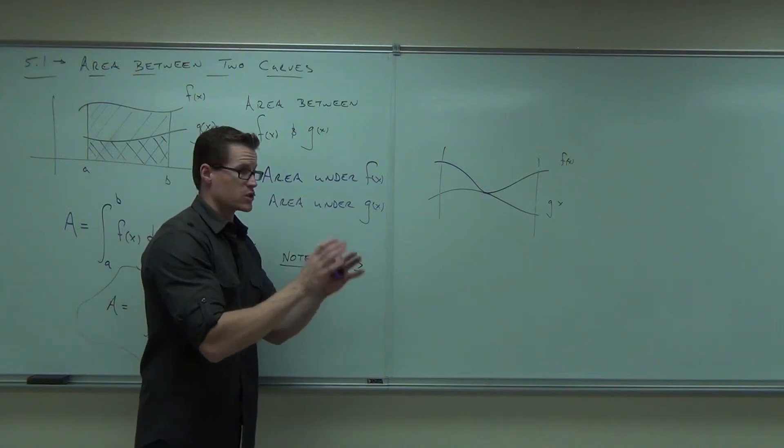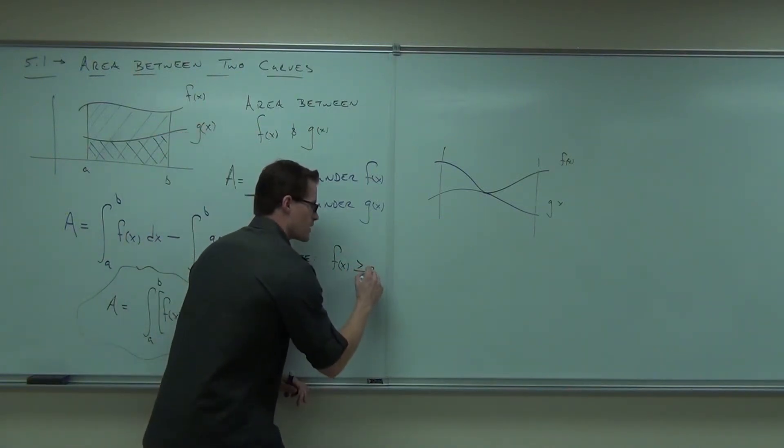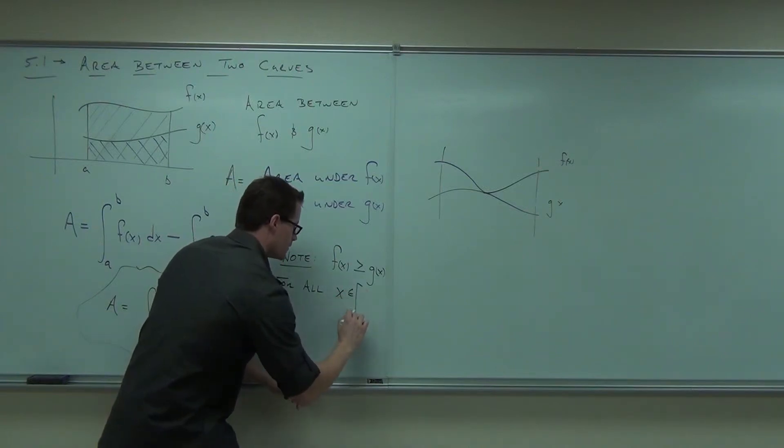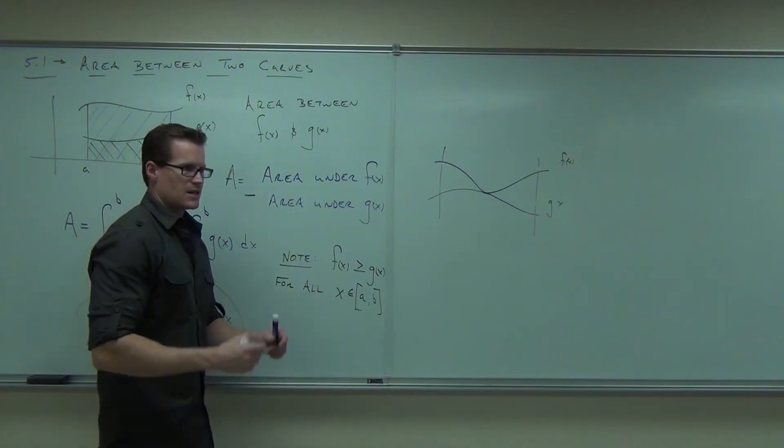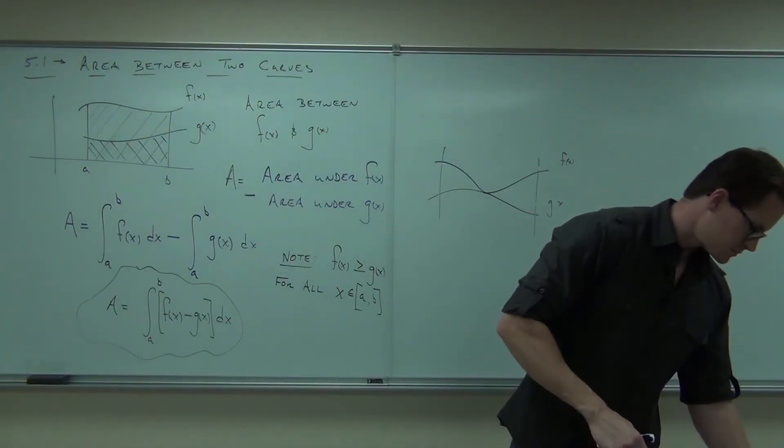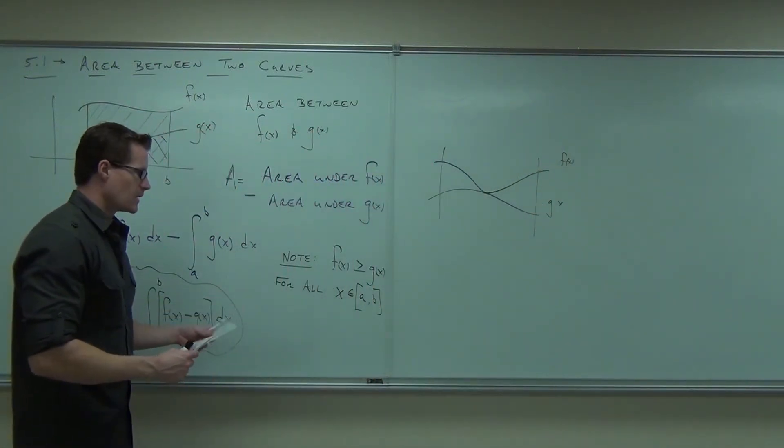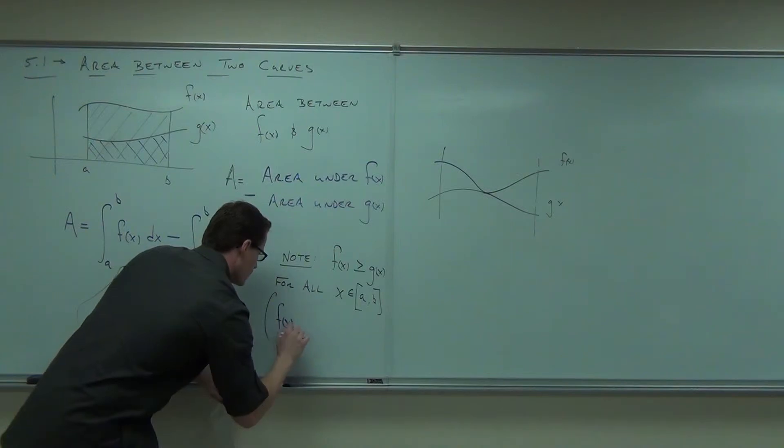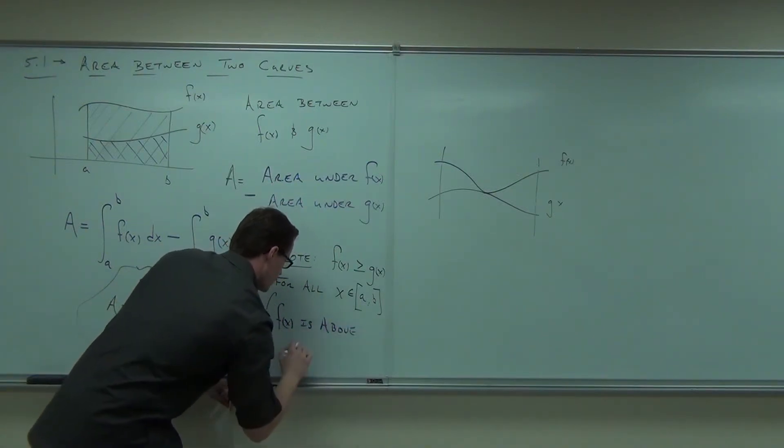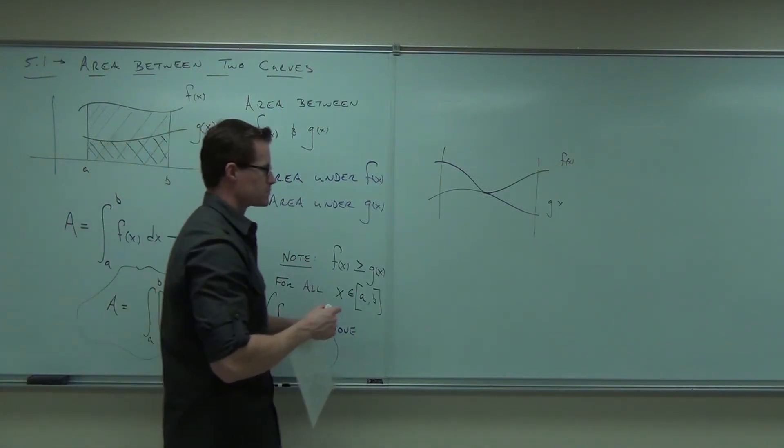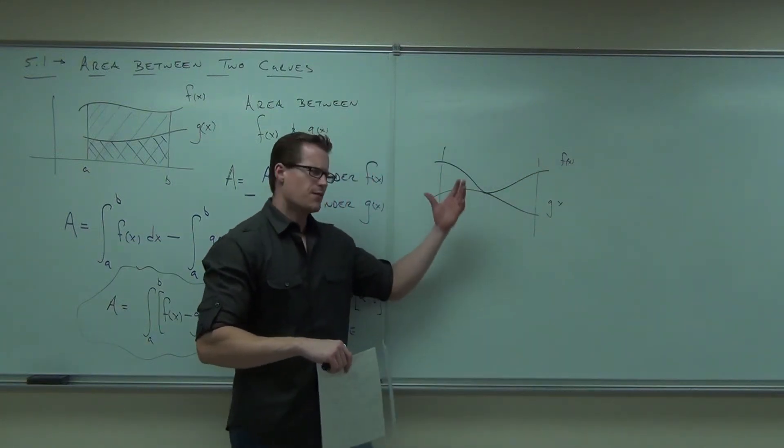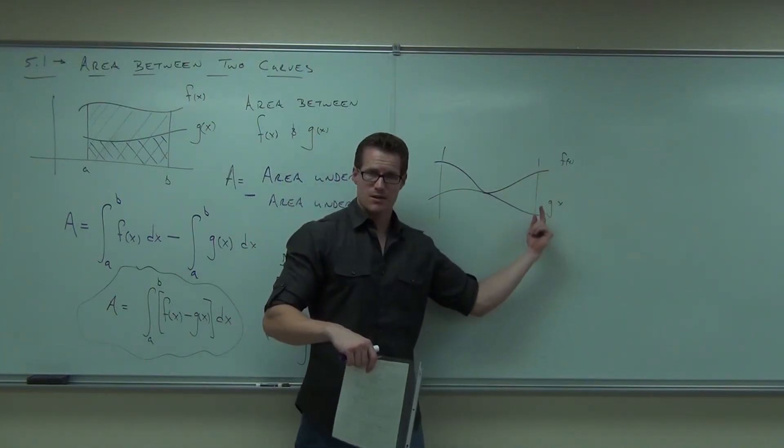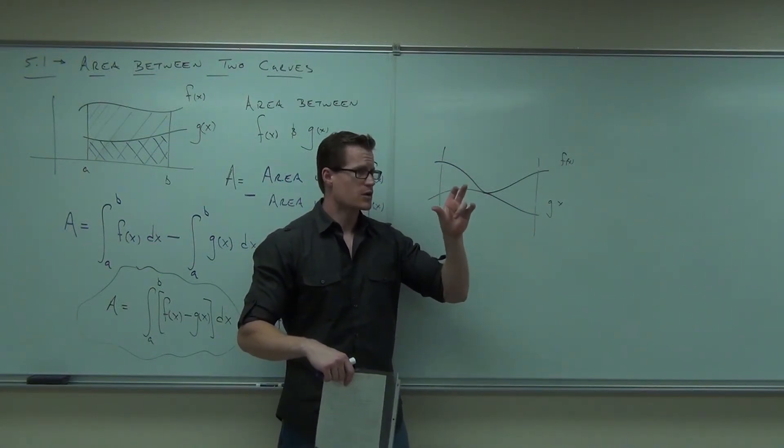You get it? So, for this to work properly, to get the total area, which is what we are looking for, what you must have is f of x greater than or equal to g of x. For all x in a to b. That little e, that's like an element, it says x is a part of that interval. In layman's terms, this says f of x is above g of x for the whole interval.